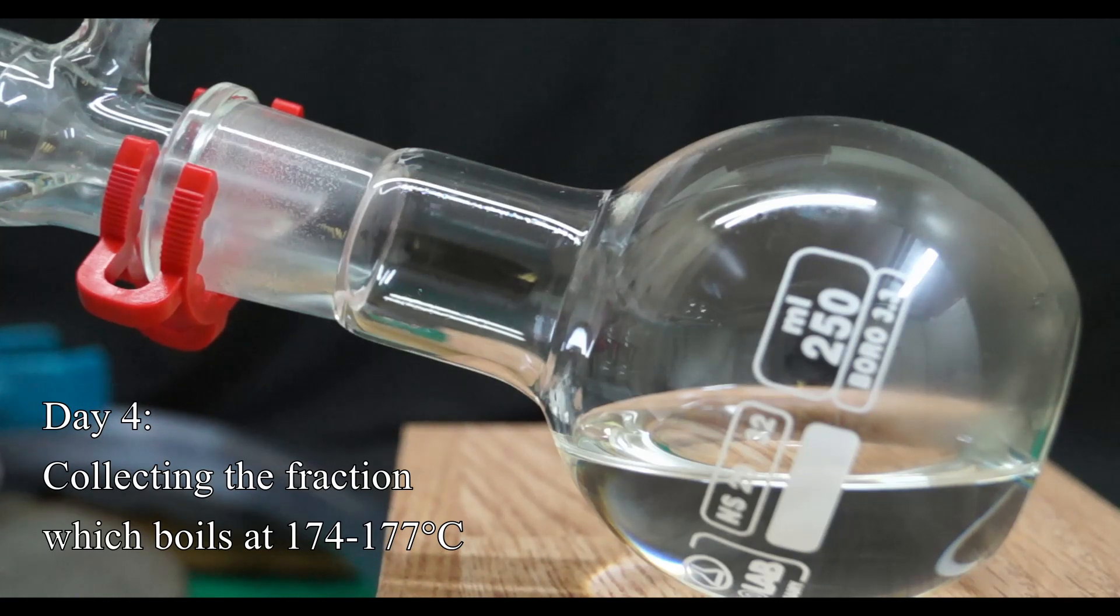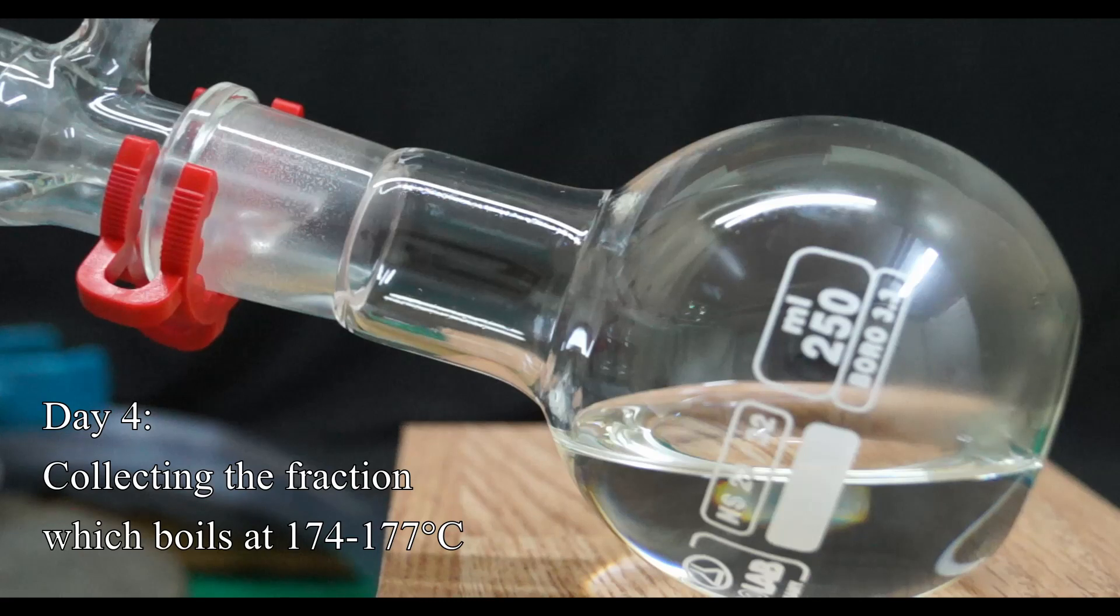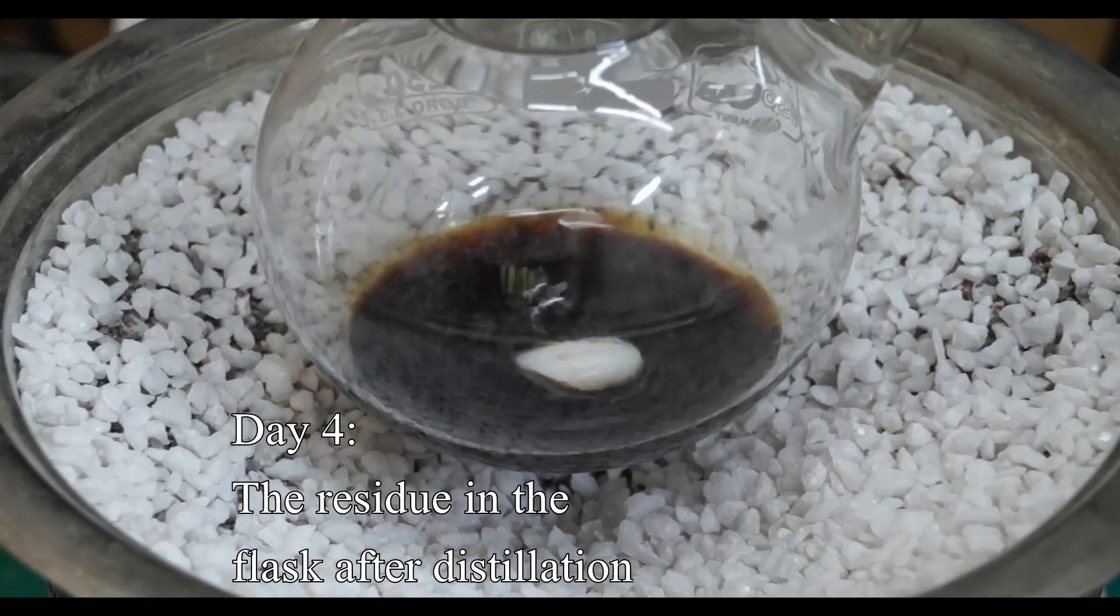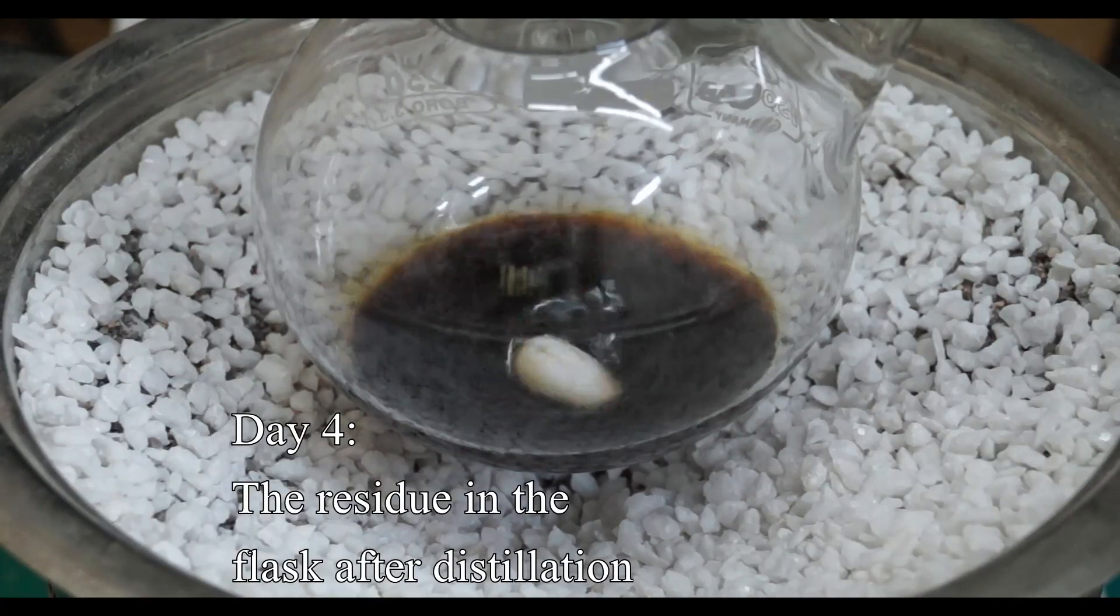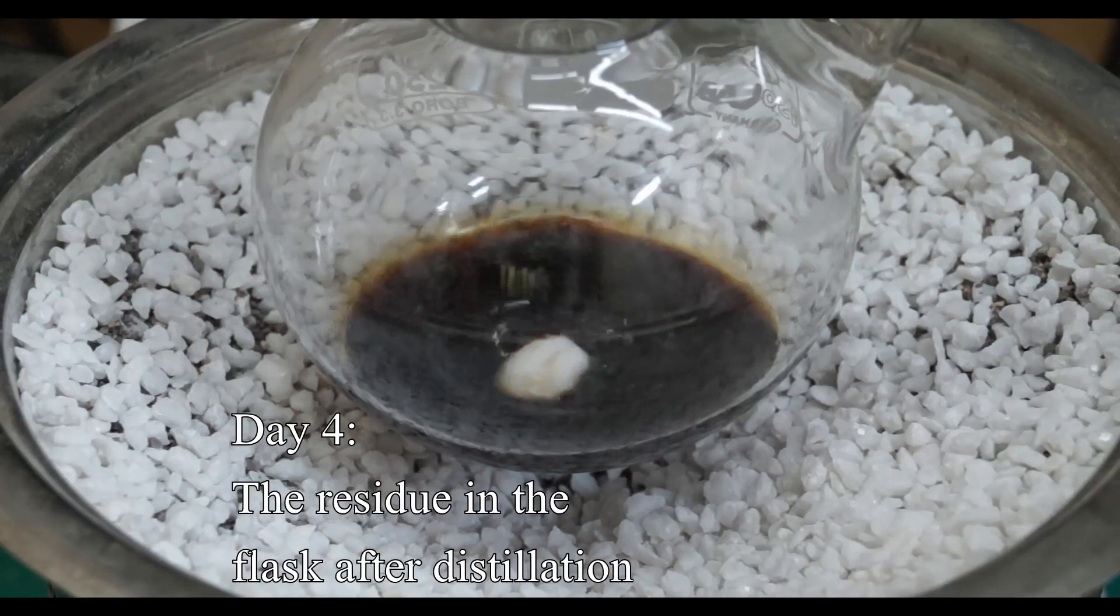After this, the temperature started dropping, indicating that there are only much higher boiling fractions still present in the boiling flask. So at this point, I stopped the distillation. Here you can see that in the boiling flask there remained a small amount of red liquid.